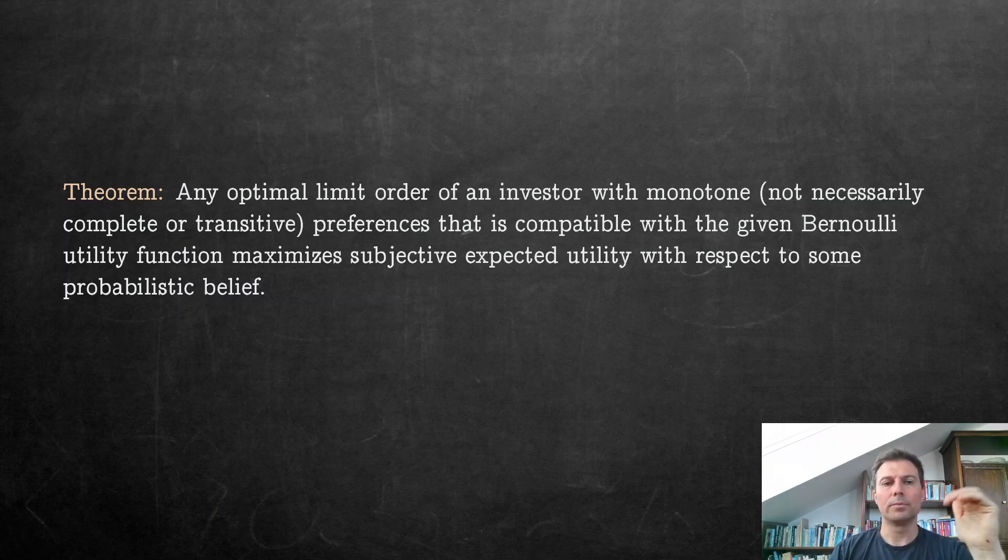Any optimal limit order of an investor with monotone preferences that is compatible with the given Bernoulli utility function maximizes subjective expected utility with respect to some probabilistic belief. That covers ambiguous decision makers as long as they have these two criteria: they have monotone preferences, and they have preferences that are compatible with a given utility function, a Bernoulli utility function. So they evaluate risk with expected utility.